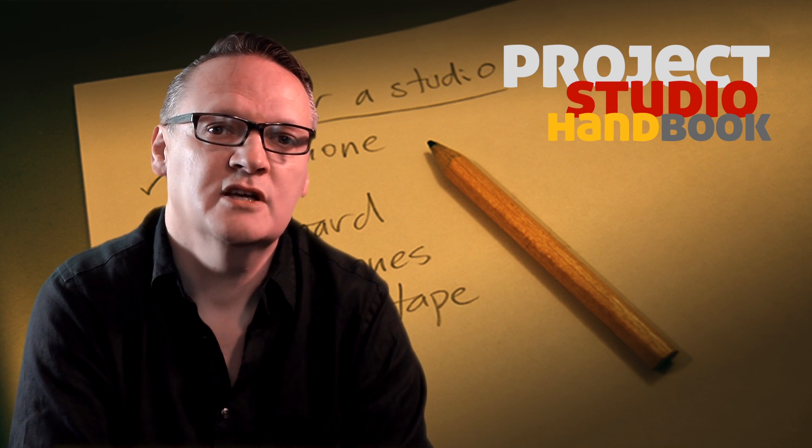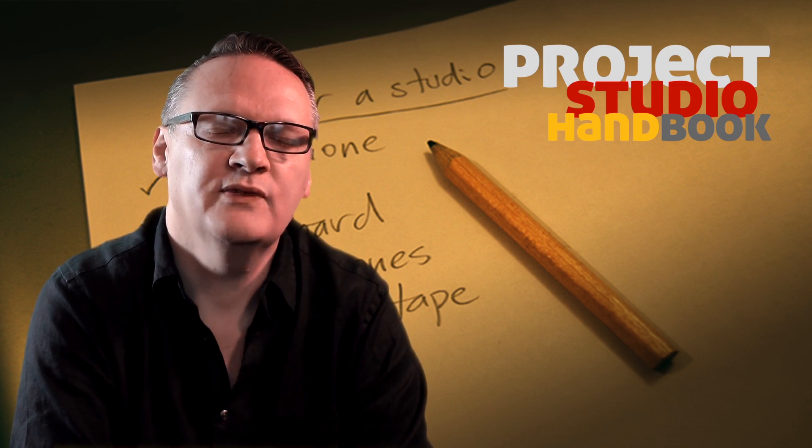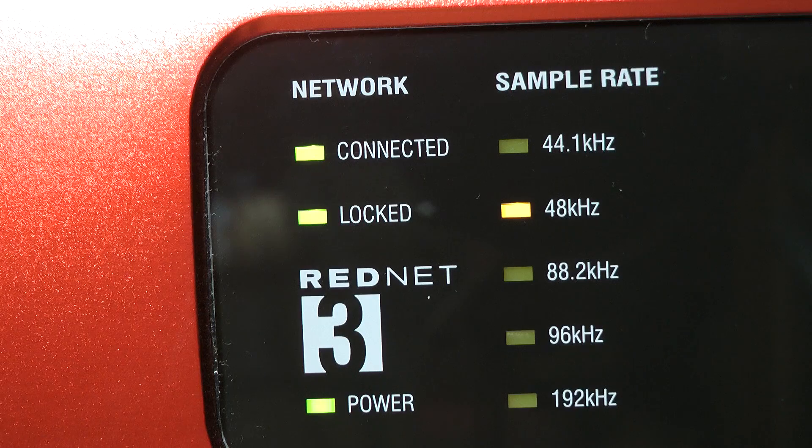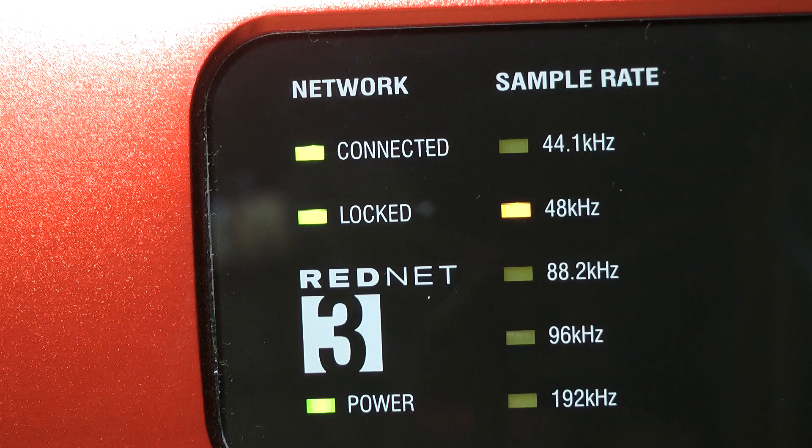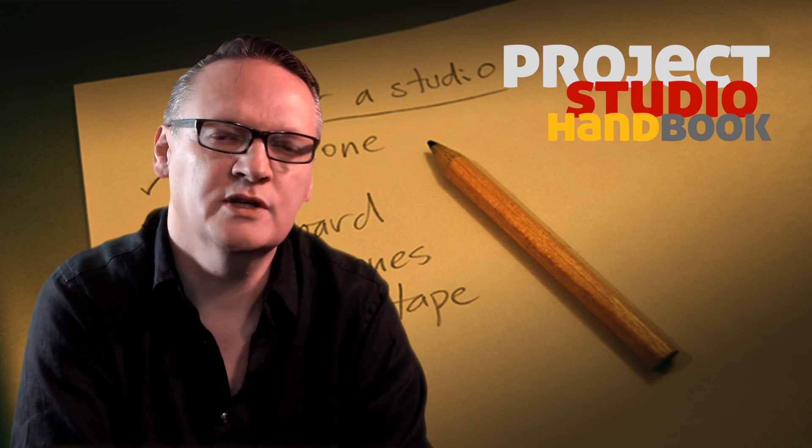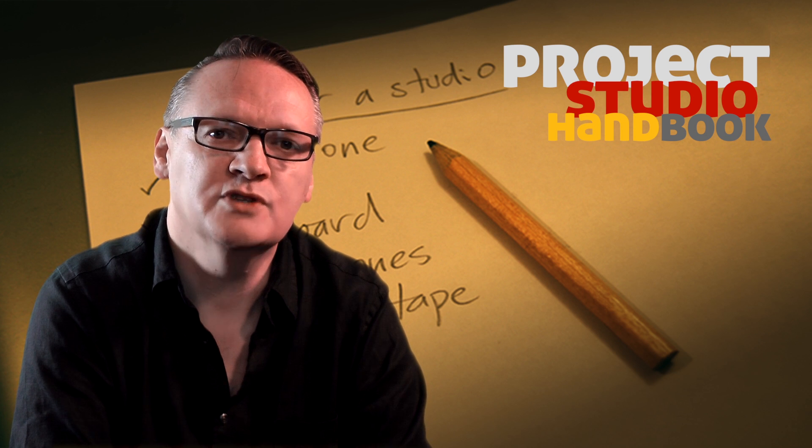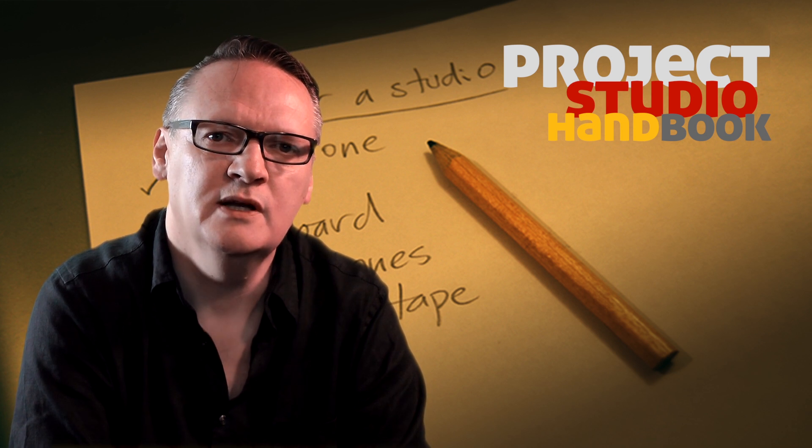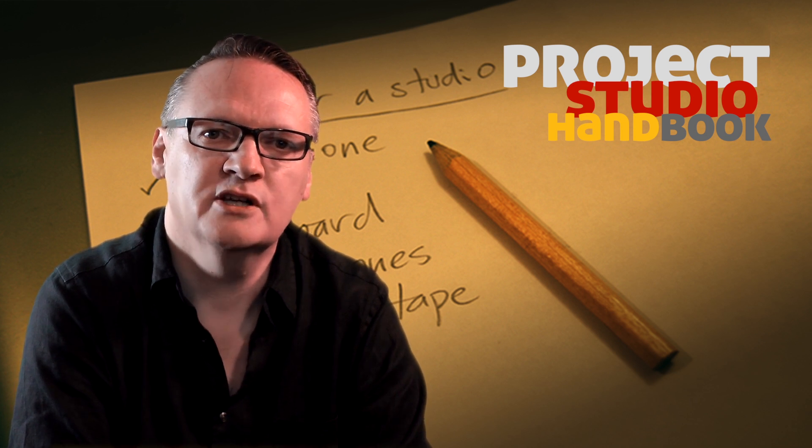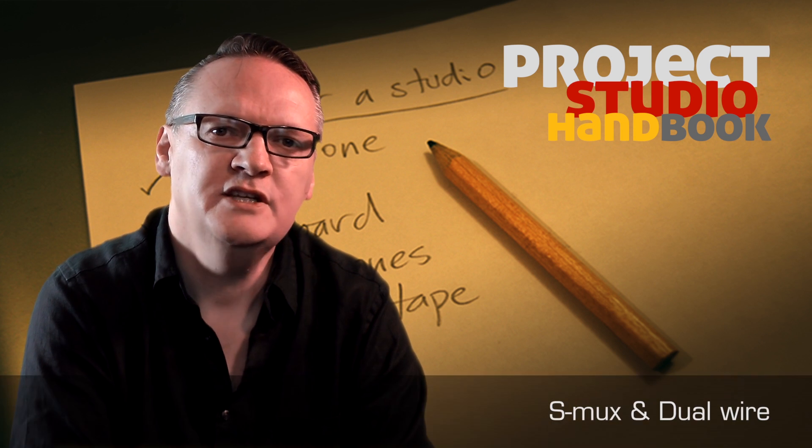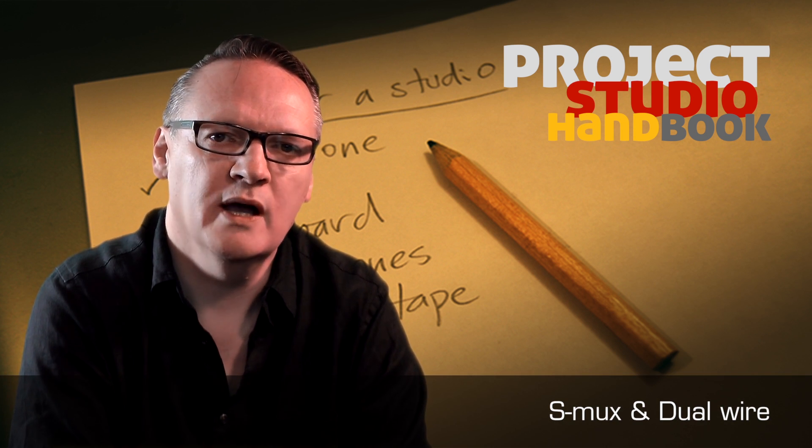The ADAT, AES, and SPDIF formats all allow for elevated sample rates, typically 96kHz, but because for many the quality improvement is negligible and the burden on CPUs and hard disks is doubled, they are rarely used in the project and home studio. These modes are called SMUX and dual wire.